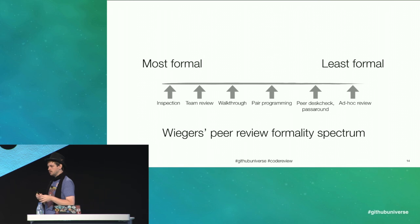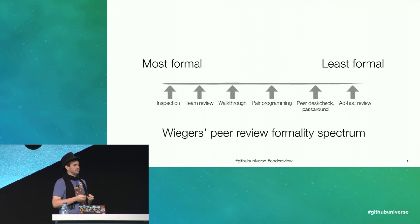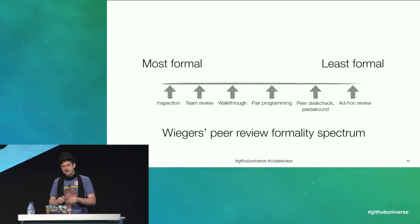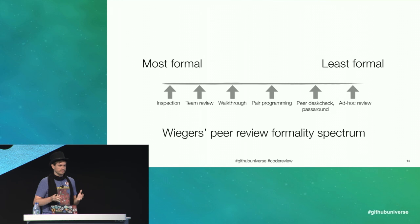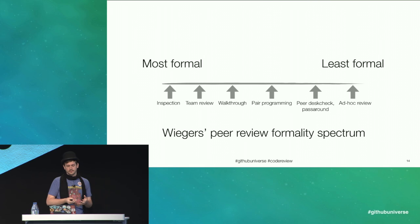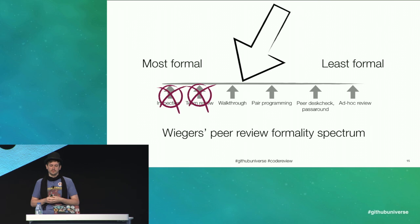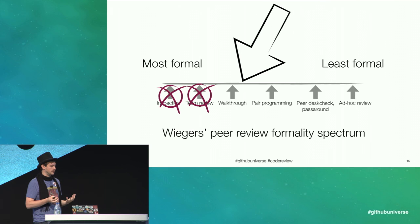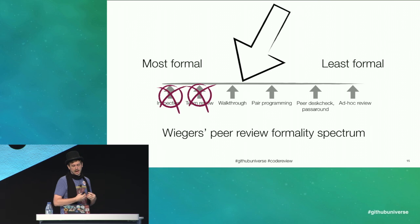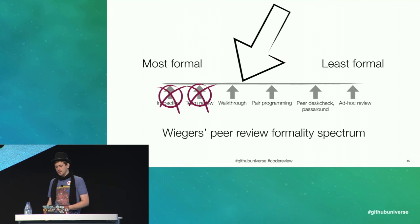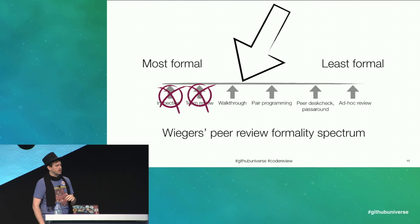Carl Wiegers describes his peer review formality spectrum in his book, Peer Reviews in Software — a fantastic book, and I highly recommend you all read it. Inspection is the most formal of these review methodologies, and ad hoc reviews are the least formal. My team's practice of code review falls somewhere between team review and pair programming. We will, from time to time, allow our pairs to review their own changes at their own discretion. However, our general rule is: if you wrote it, you shouldn't review it.